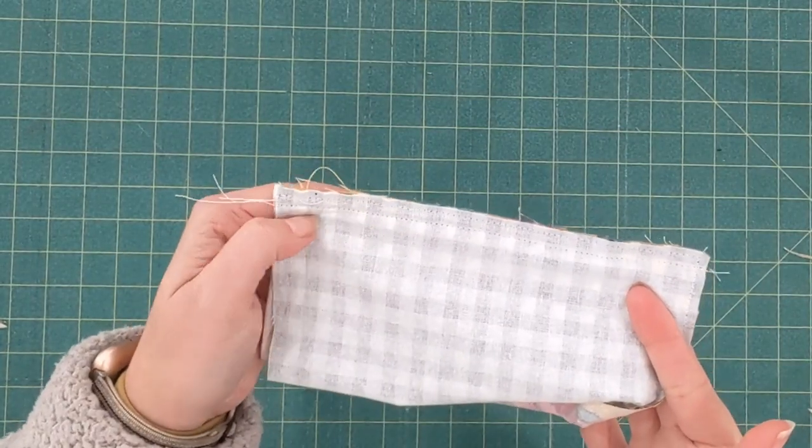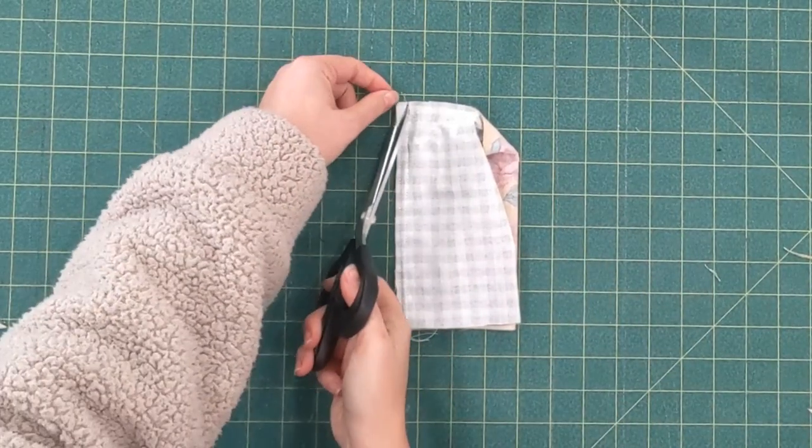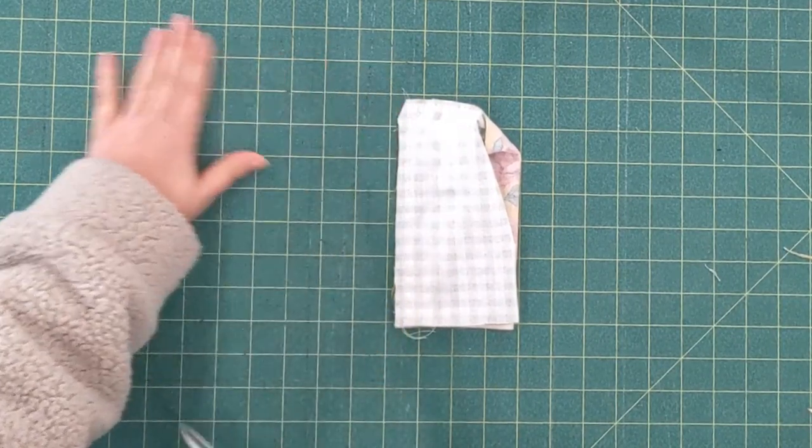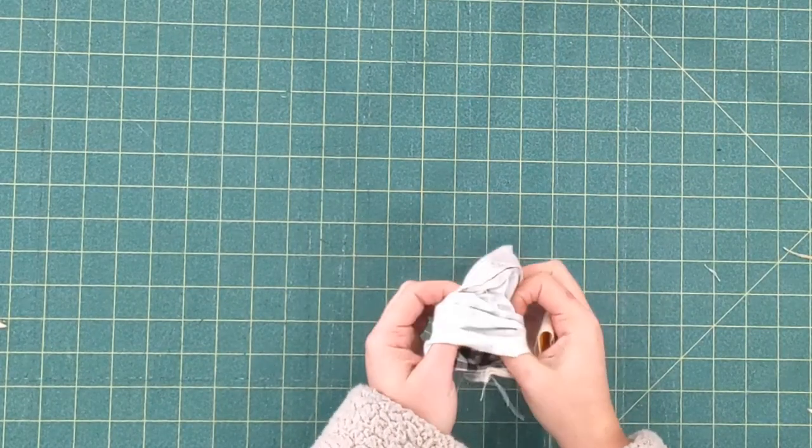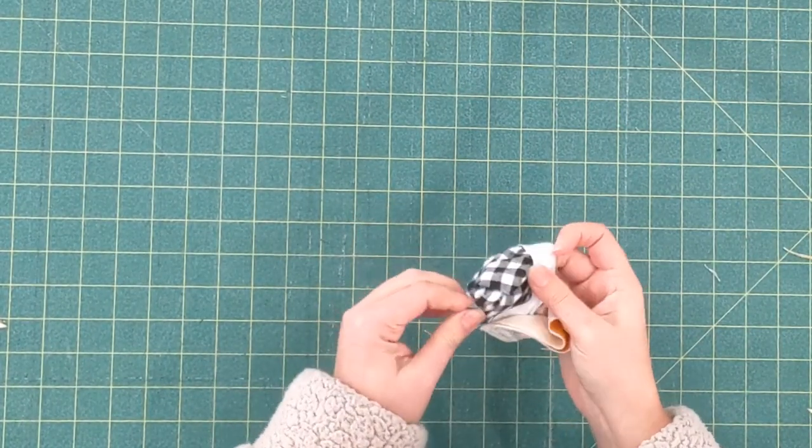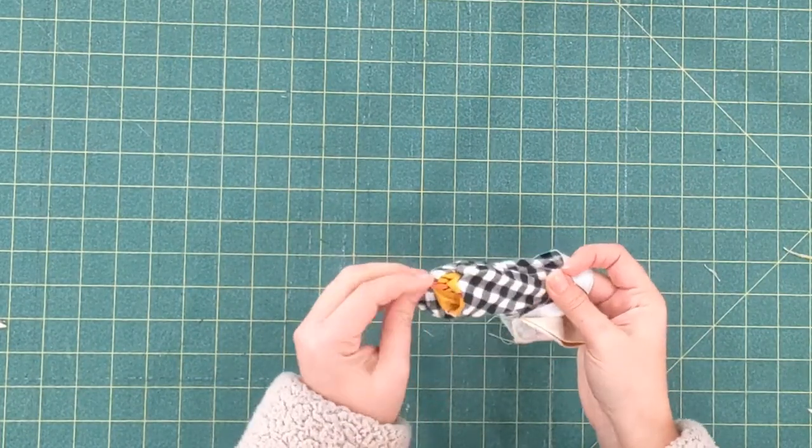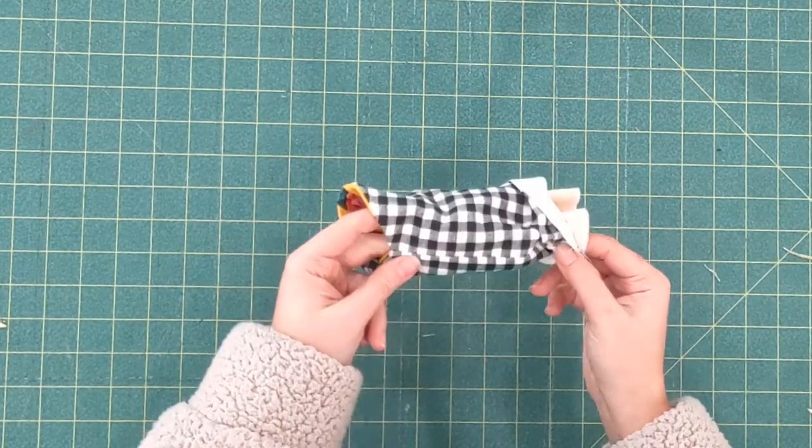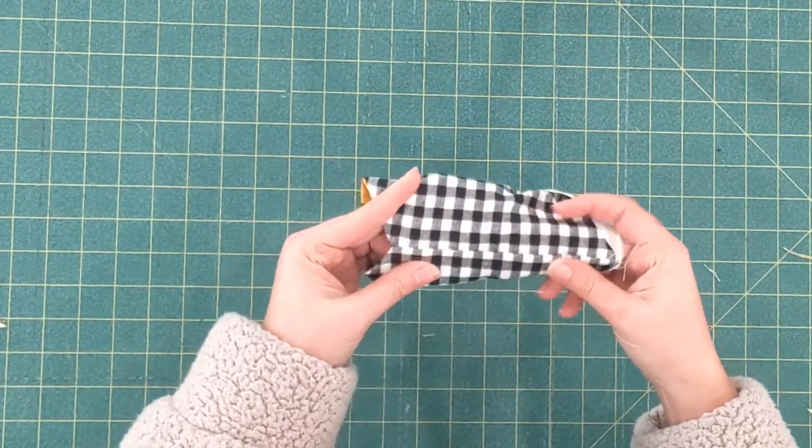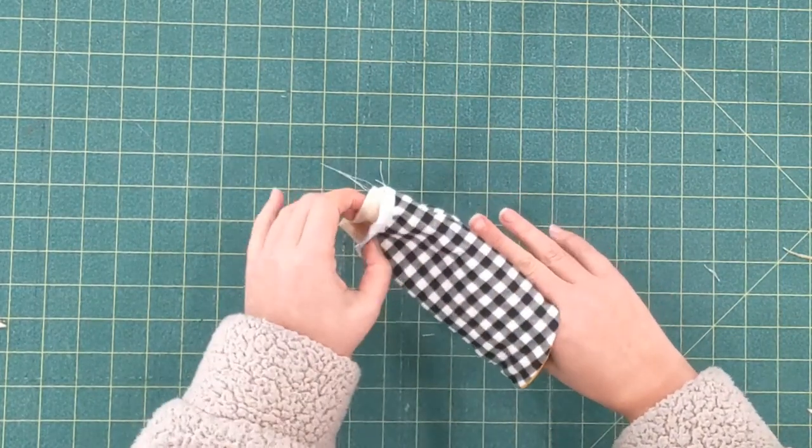So you can see I've stitched another line there and you can again clip the corner and now we're going to flip it so the lining is right sides out. You can see that seam is now hidden, which is exactly what we wanted.